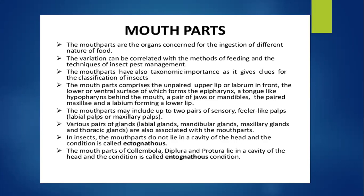Various pairs of glands such as labial glands, mandibular glands, maxillary glands, and thoracic glands are also associated with the mouthparts. These glands are present in insects and help them in detecting taste, producing various kinds of enzymes, and helping in mixing food.